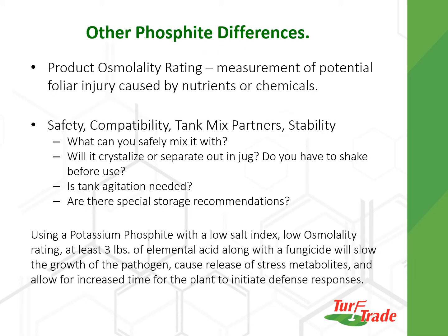Just a few more things when you're choosing a phosphite. I mentioned the osmolality rating that measures the potential for foliar injury. Osmolality ratings go between 0 to 2000 — obviously the higher you go, the more your potential for injury because of the salt content. The other things to consider are: what can you safely tank mix it with? No one is going out with just one product in a tank mix. So what can the phosphite safely be mixed with? This is going to relate to how much salt is in that product. Does it crystallize? Is it going to separate? Do you have to shake before use? Do you need agitation in the tank? Are there special storage recommendations? All of these need to be asked before you buy your phosphites.